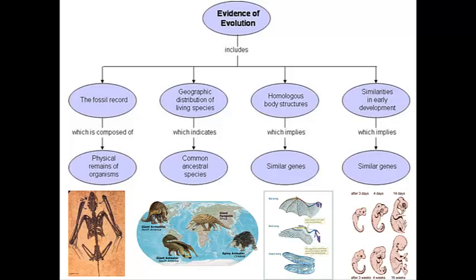And then similarities in early development, which also implies similar genes. That is to say that we all end up looking kind of the same in the very early beginnings of development, whether we're a human, a chick, or a pig.